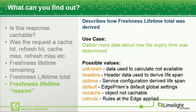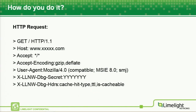There's also a fifth piece which describes how that total lifetime was derived. Were we able to use the headers to define how long that object should live? Were we using a specific configuration to override the headers? Did we use our defaults? Did we not cache because we were told not to? Did we use some kind of rule during the request and response flow to determine how long to cache something for? So these are the five key things that you can find out using these troubleshooting headers.